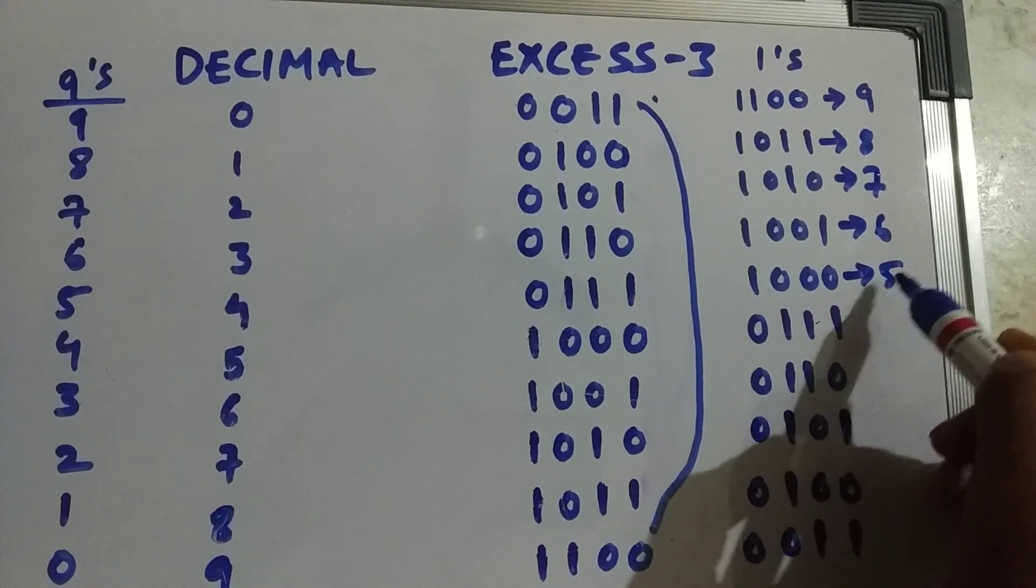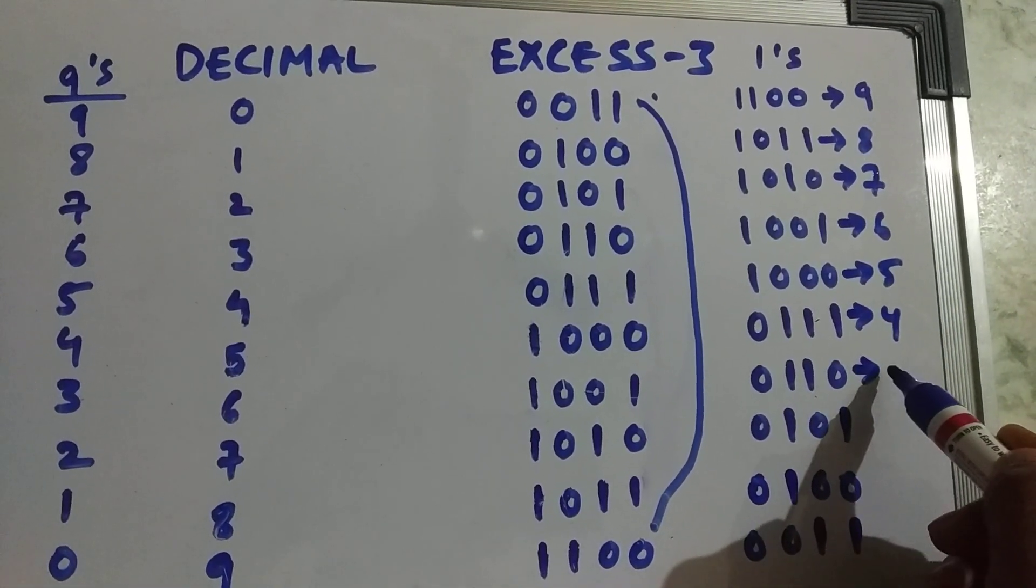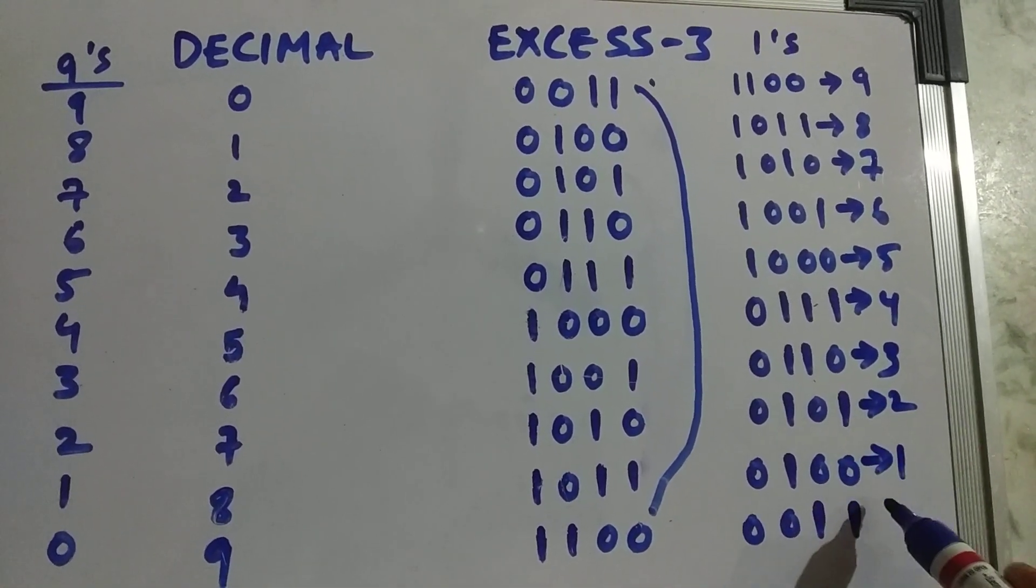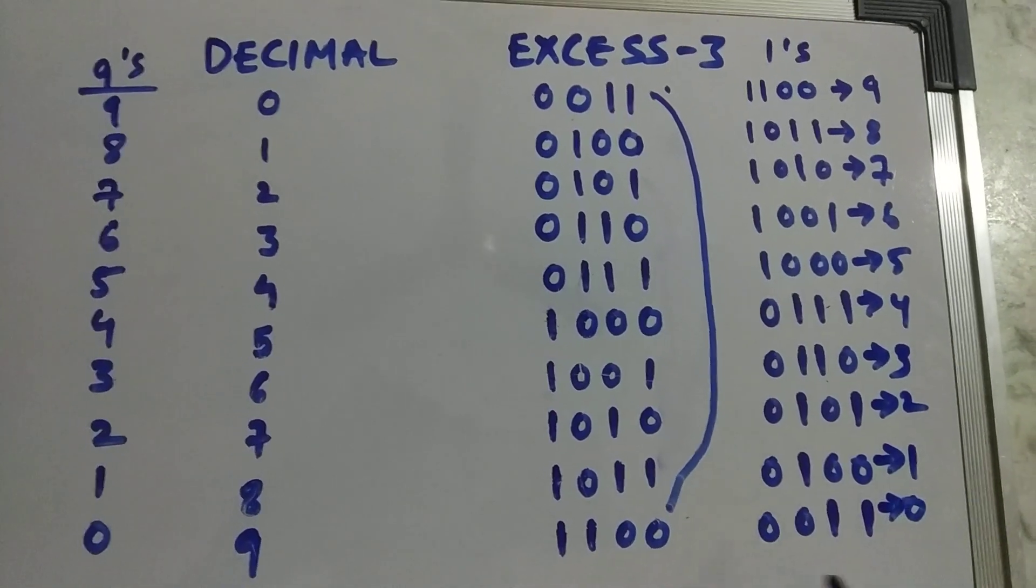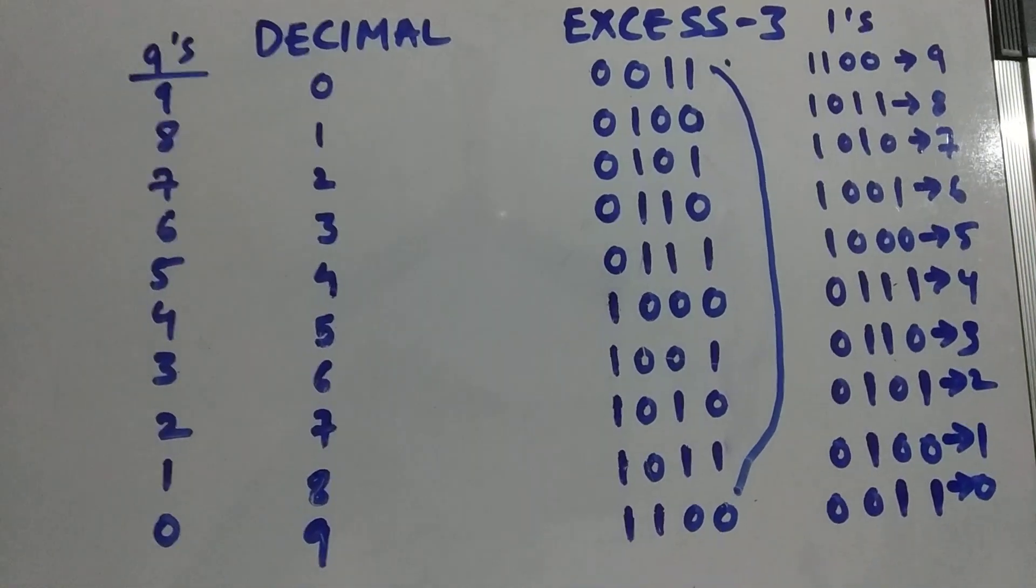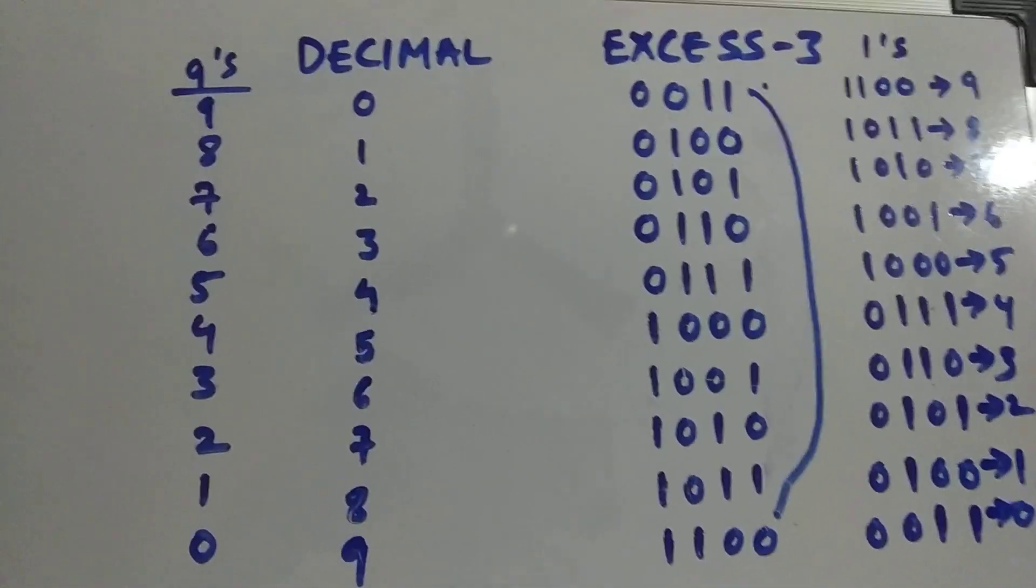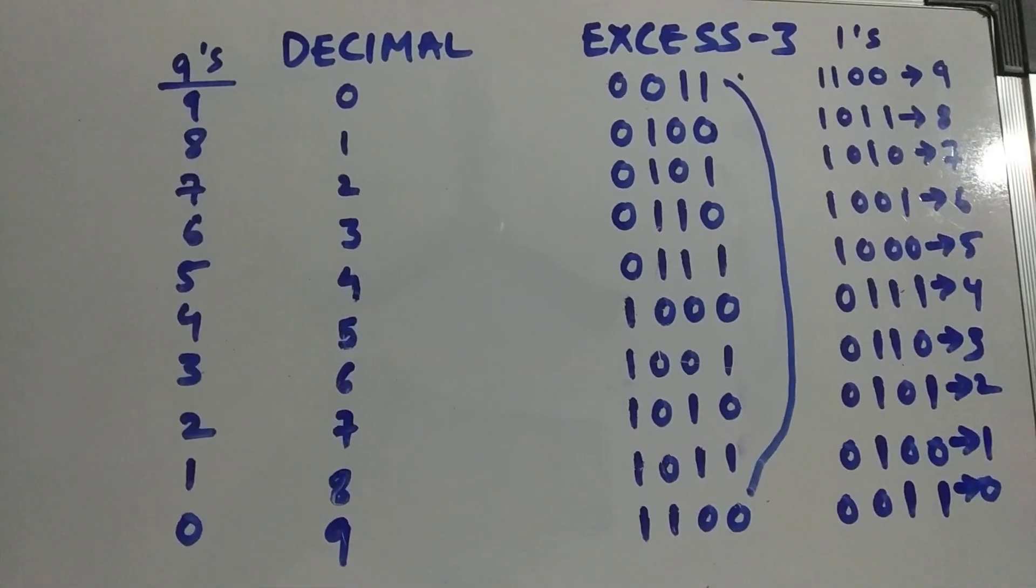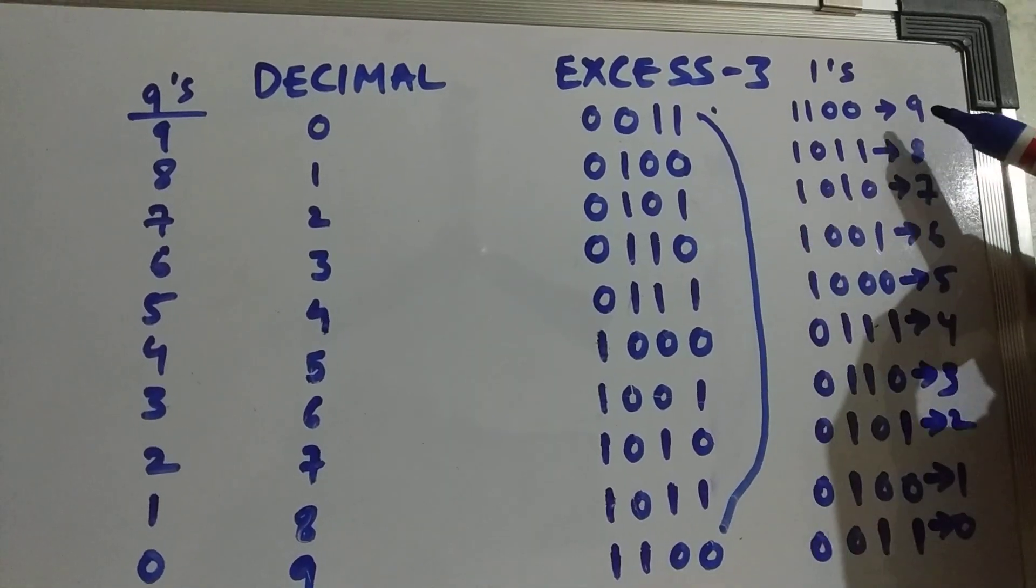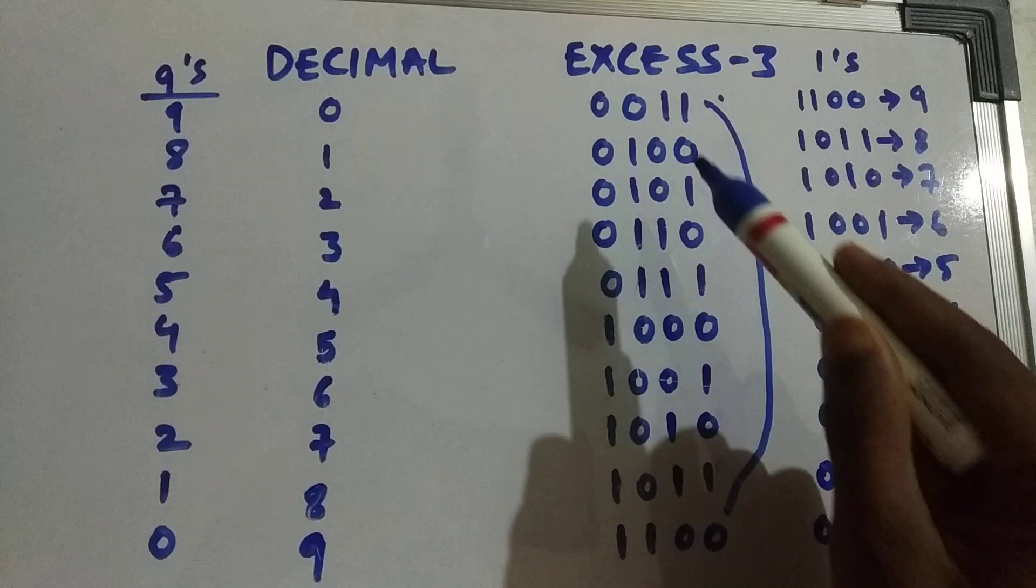We can write it right now. As you can see, this looks like 9's complement. So when this happens, when 9's complement and 1's complement are equal, then it's called a self-complementing code. Just take 9's complement and 1's complement and see whether the values are equal or not.